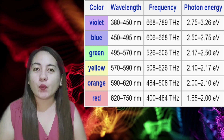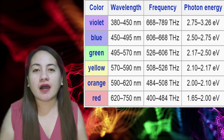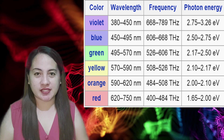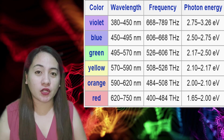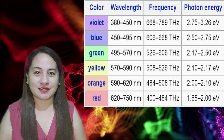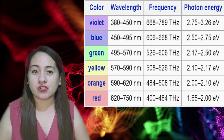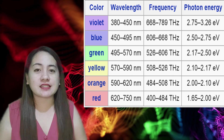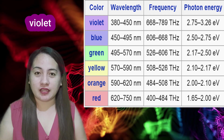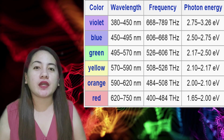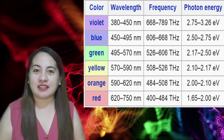How about the color of light with the shortest wavelength? Correct — that is violet. How about the color of light with the highest frequency? Correct — that is violet. How about the color of light with the lowest frequency? Correct — that is red. Which color of light has the highest amount of energy? Correct — that is violet. How about the color of light with the least amount of energy? That is red.